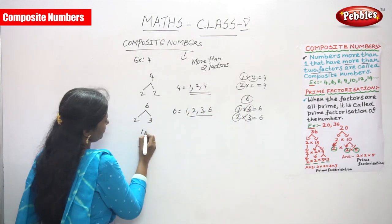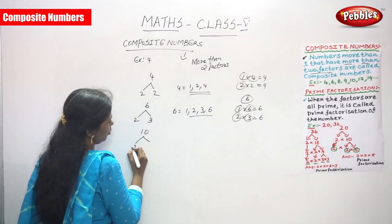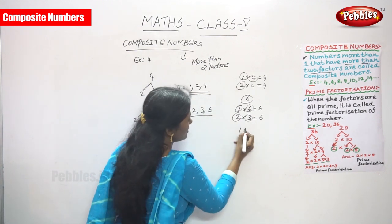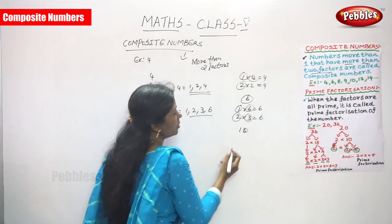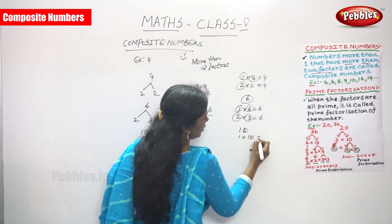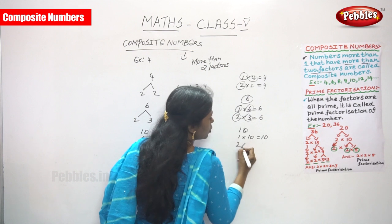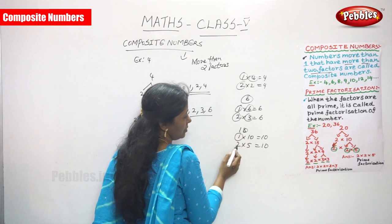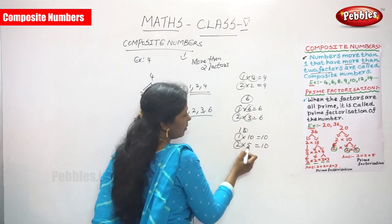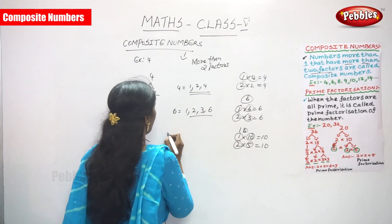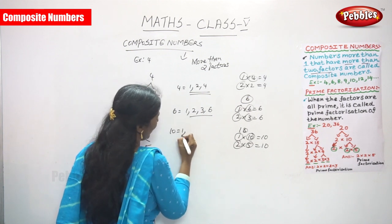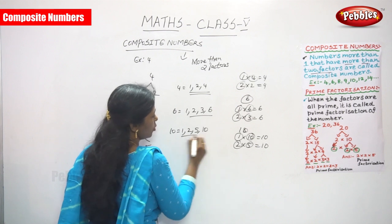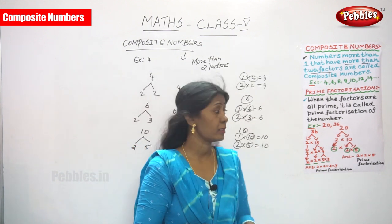Next is 10, which is two times five. For ten: one into ten is ten, and two into five is ten. So the factors of 10 are 1, 2, 5, and 10 — that is more than two factors. So 10 is also a composite number.